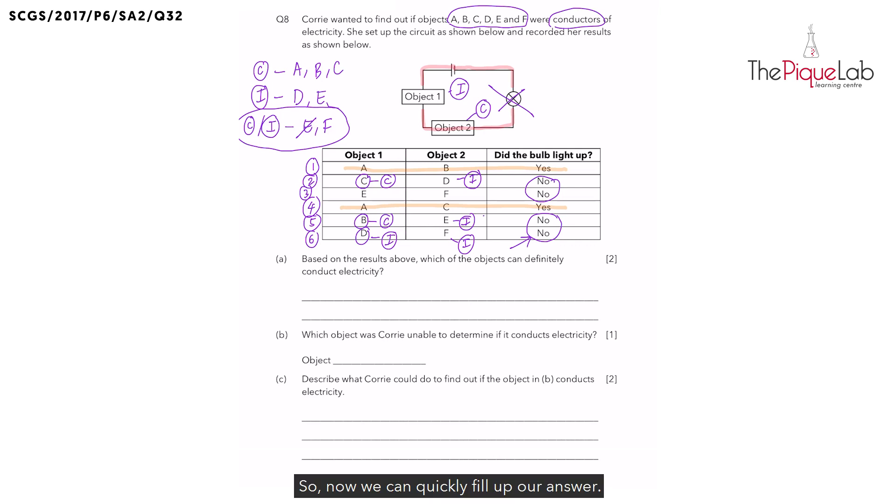So now we can quickly fill up our answer. For question A, which of the objects can definitely conduct electricity? So our confirmed conductors of electricity are objects A, B, and C.